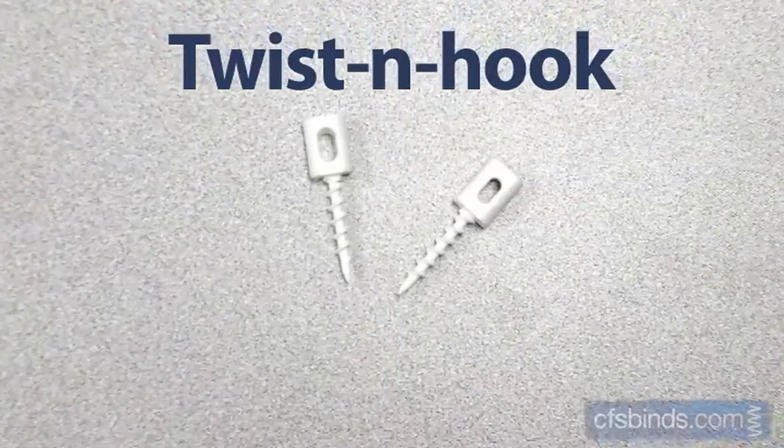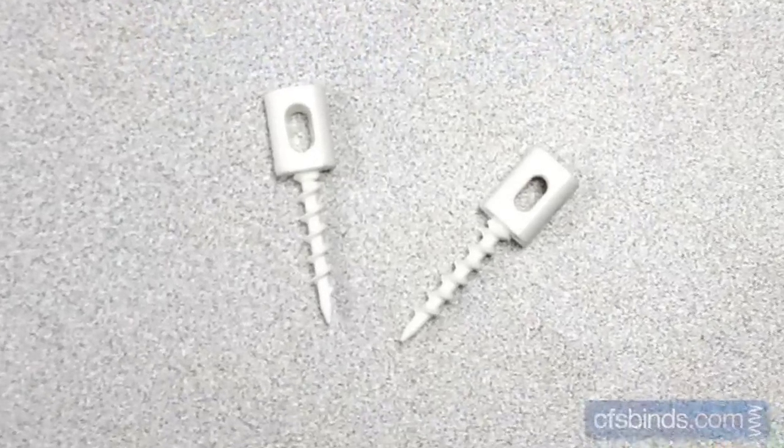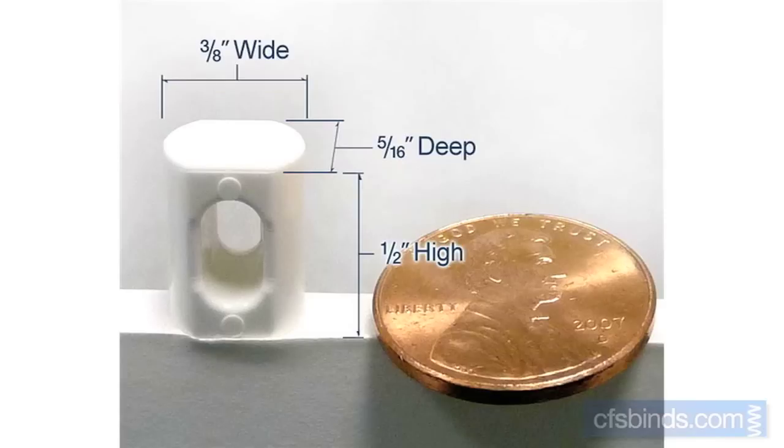Twist and hook hangers are ideal for hanging foam core board or gator board. The small head is barely visible, measuring only half an inch high by three-eighths inch wide, and the large eyelet allows for easy threading of twine, fishing line, or wire.